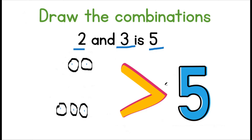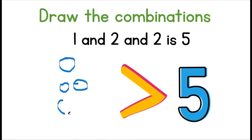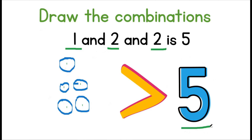Great job! Very well done. One and two and two is five. We draw one, then one and two, then one and two and three. One, two, three, four, five. This means that one, two, and two gives us five.